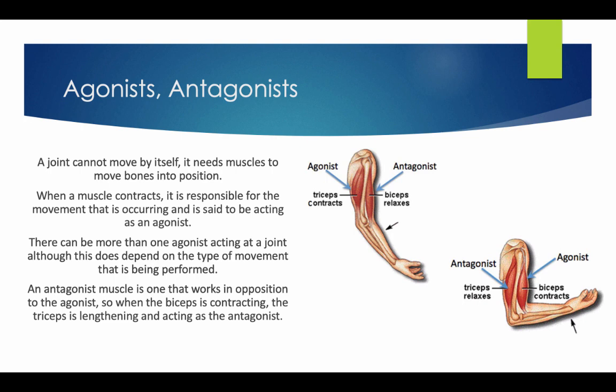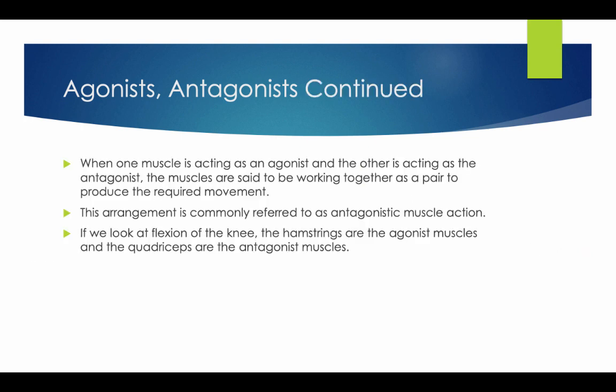An antagonistic muscle is one that works in opposition to the agonist, so when the bicep is contracting, the tricep is lengthening and acting as the antagonist, as you can see from the diagrams here. When one muscle is acting as an agonist and the other is acting as an antagonist, the muscles are said to be working together as a pair to produce the movement required. This arrangement is commonly referred to as antagonistic muscle action. For example, in flexion of the knee, the hamstrings are the agonist muscles and the quadriceps are the antagonistic muscle.